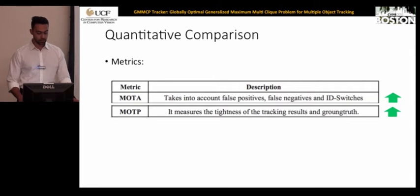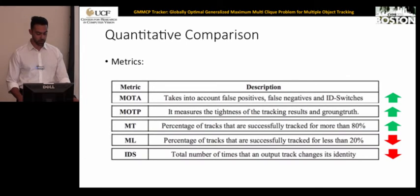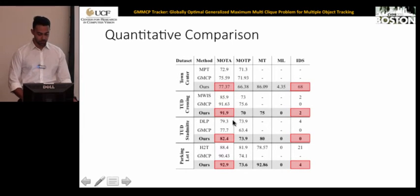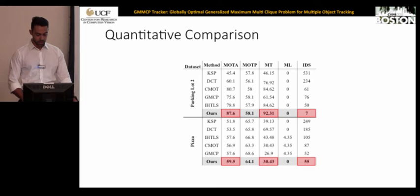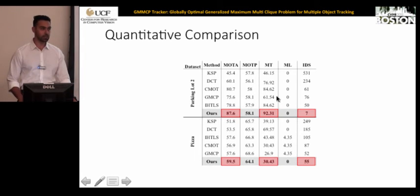For quantitative comparison, we use two sets of metrics: CLEAR metrics MOTA and MOTB, and trajectory-based measures including mostly tracked, mostly lost, and ID switches. For the Town Center sequence, MOTA increases by 2% and ID switches are lower. For TUD Crossing, MOTA is close to state-of-the-art. For sequences like STAT, MOTA improves by 5%. On two new sequences — Parking Lot 2 and PIZO — we improve state-of-the-art in MOTA, mostly tracked, and ID switches. Publicly available implementations were used, so reported numbers are a good lower bound for those methods.